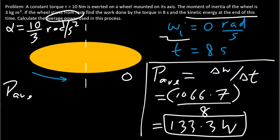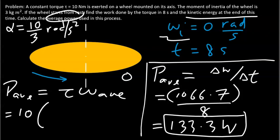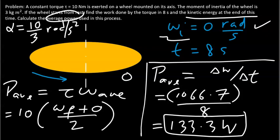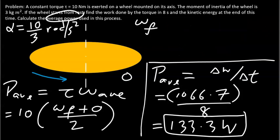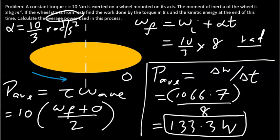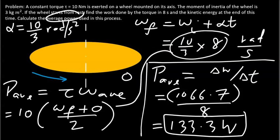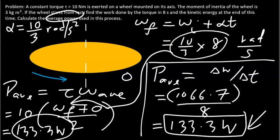Another way to calculate average power is using torque times average angular speed. The torque is 10 N·m. The average angular speed is the final angular speed plus the initial angular speed (which is 0) divided by 2. The final angular speed at 8 seconds is found from kinematics: ωf = ωi + αt = 0 + (10/3) × 8 radians per second. Substituting this gives the same result of 133.3 watts. That solves the problem. Thank you for watching.